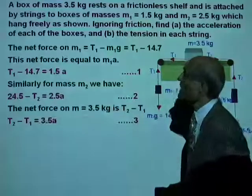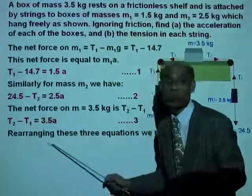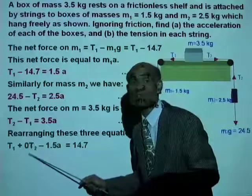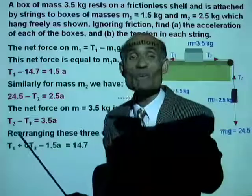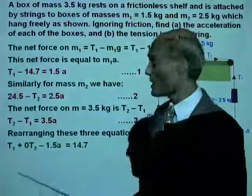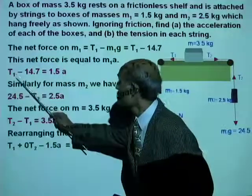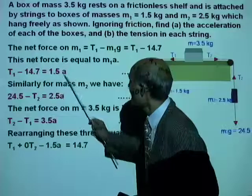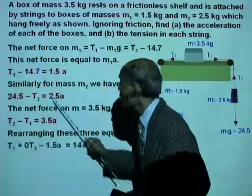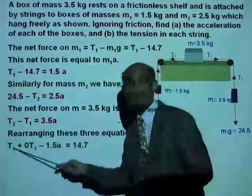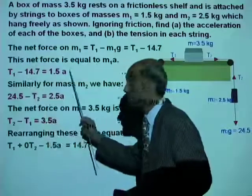We have three equations, and you can solve for these three equations. And in order to solve these, you need to rearrange them. Now, look at where I'm going to rearrange them. T1 plus 0T2. Remember, we have three variables, and each equation must contain all the three variables if you want to use your calculator to do that. I want you to solve these equations on the calculator. So our first equation is T1 plus 0T2 minus 1.5A equal to 14.7.